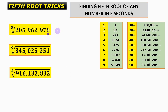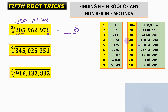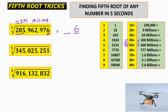Next question: the unit place is 6, and the unit place always remains the same. This number is approximately 205 million, which lies between 100 million and 300 million, so the number lies between 40 and 50. With the unit place equal to 6, our answer is 46.